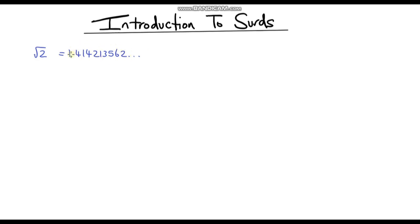It also never repeats — there's never a pattern that repeats. You'll get some numbers that are recurring decimals, but this isn't one of those. Because it keeps going on and on forever, we cannot write this as a fraction, so we call this a surd. It's any number that cannot be written as a fraction.